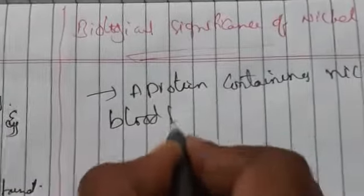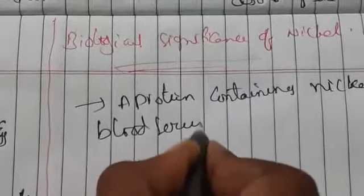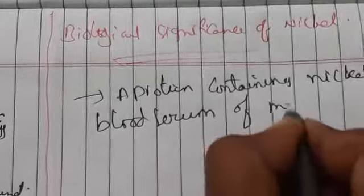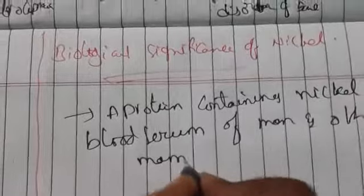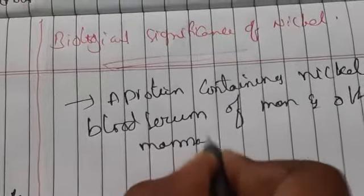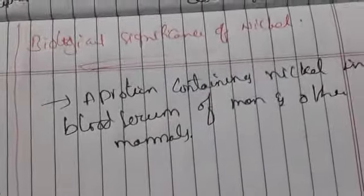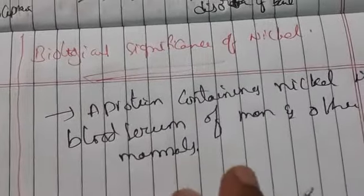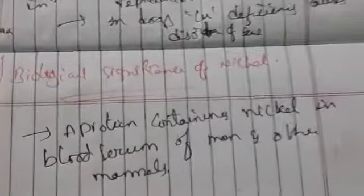Nickel is found in blood serum of man and other mammals. There is an enzyme present in a number of plants in very low concentration, which is urease.